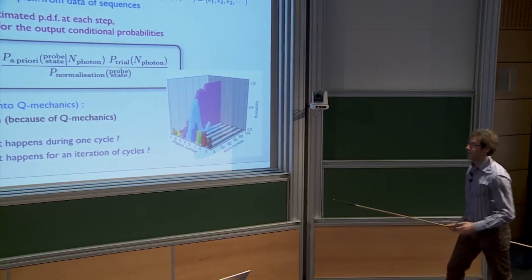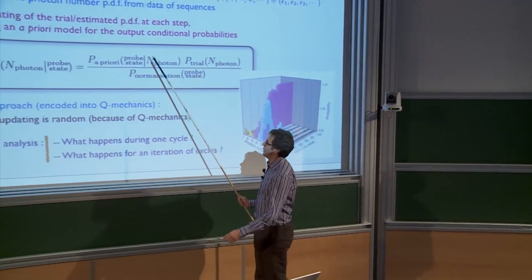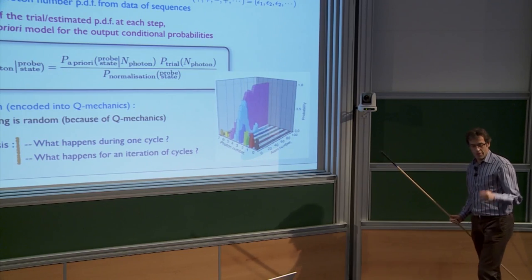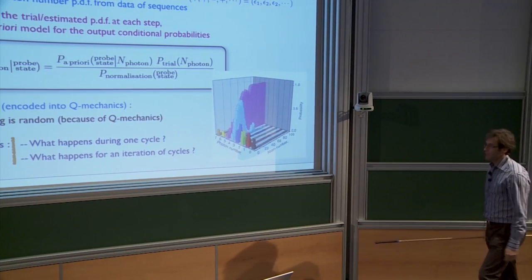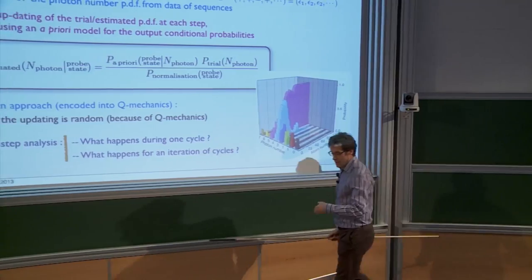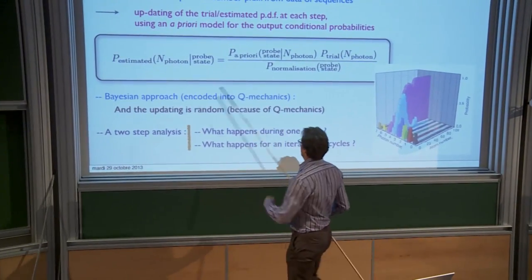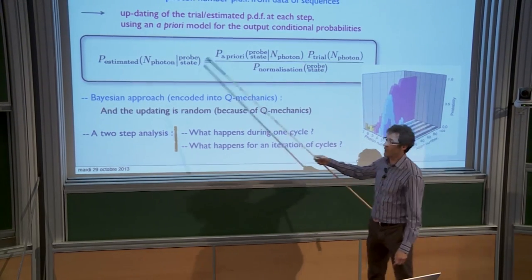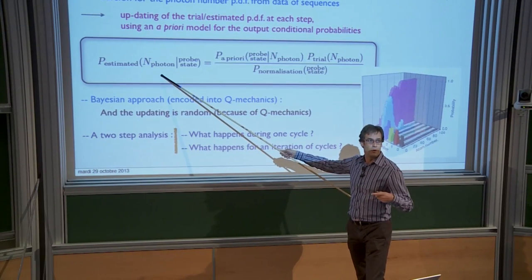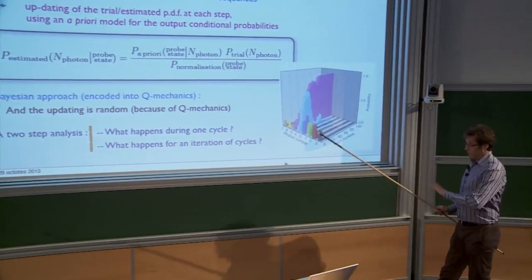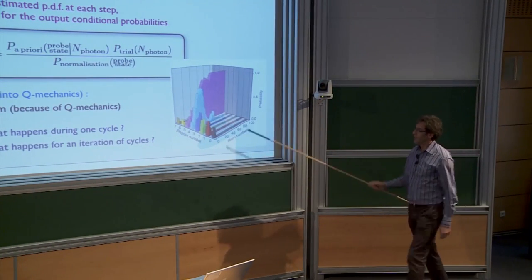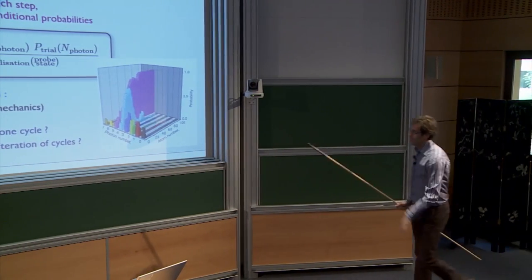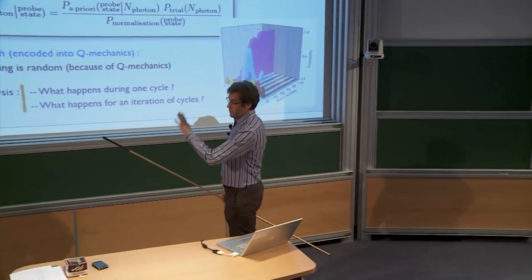You never directly use quantum mechanics in the updating — you just use Bayes' rule with an a priori model for the conditional probability of observing something on the probe conditioned on the state of the cavity. At each subsequent step, you use the previously estimated distribution as the new prior, and repeat this many times. This is purely classical. When you repeat this process, the probability distribution function collapses — the collapse is nothing quantum, it's classical.